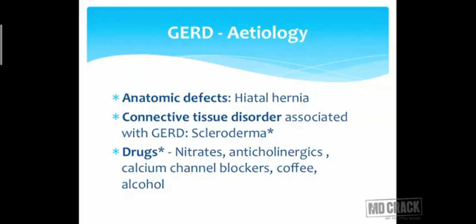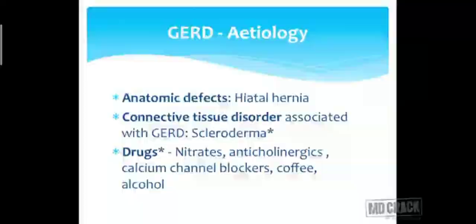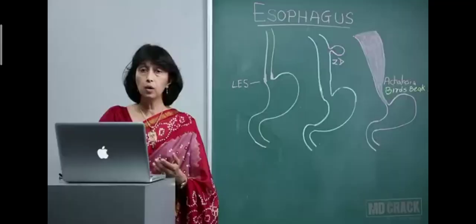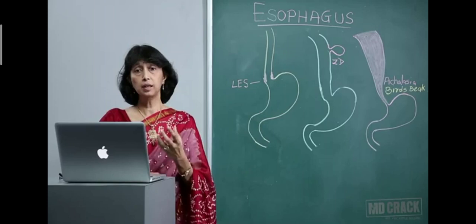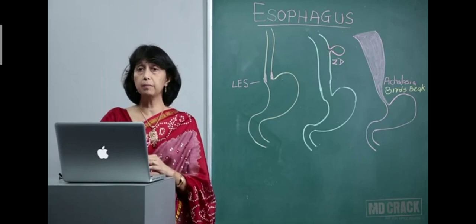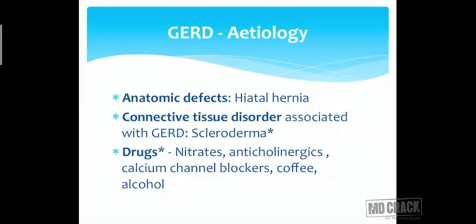GERD can be caused by anatomic defects like hiatus hernia, where there is an increased gap in the diaphragm and part of the stomach comes up into the thoracic cavity — either a sliding or rolling hernia. Connective tissue disorders like scleroderma can also cause reflux disease — this is often asked in MCQs. Certain drugs lower esophageal tone and increase reflux: nitrates, anticholinergics, calcium channel blockers, coffee, and alcohol.